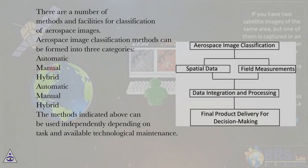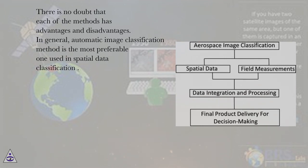The three categories are: Automatic, Manual, and Hybrid. The methods indicated above can be used independently depending on task and available technological maintenance. There is no doubt that each of the methods has advantages and disadvantages. In general, the automatic image classification method is the most preferable one used in spatial data classification.